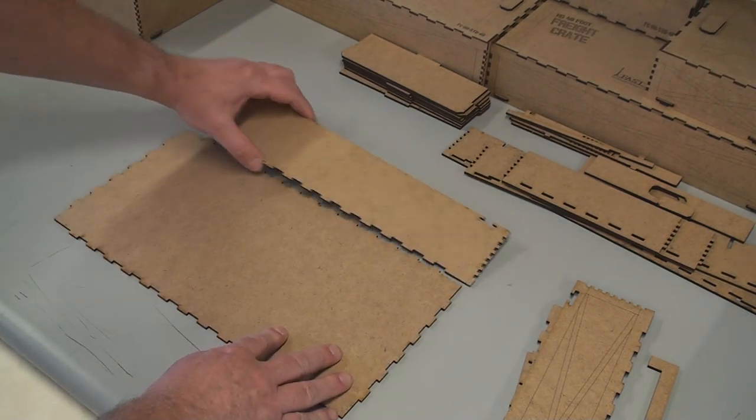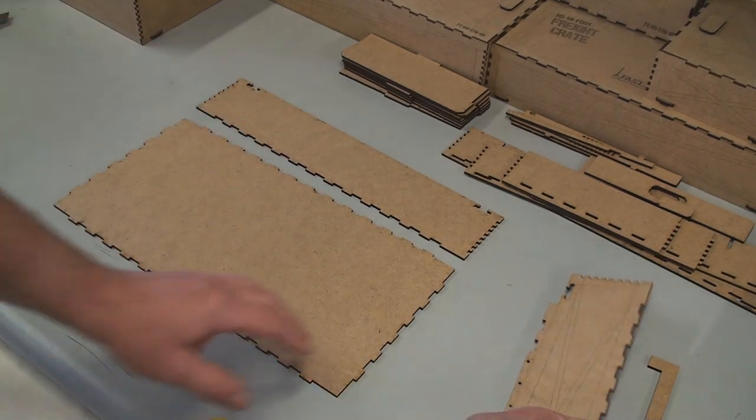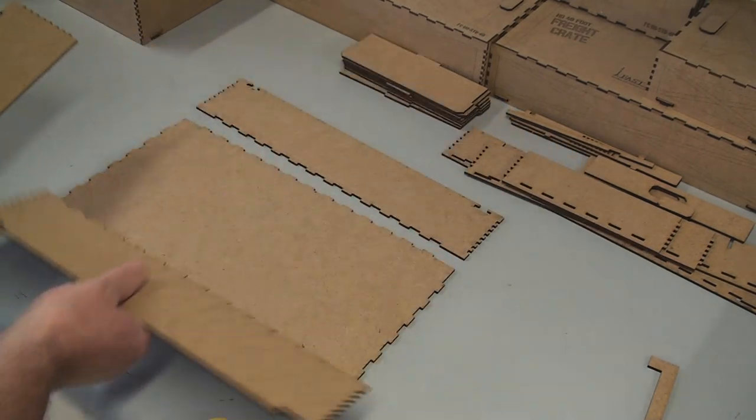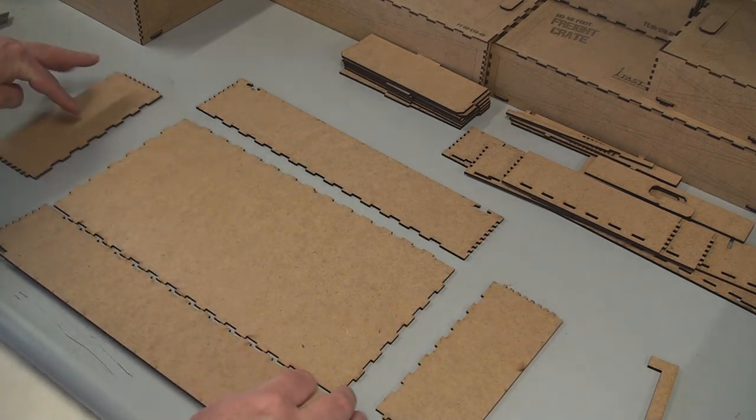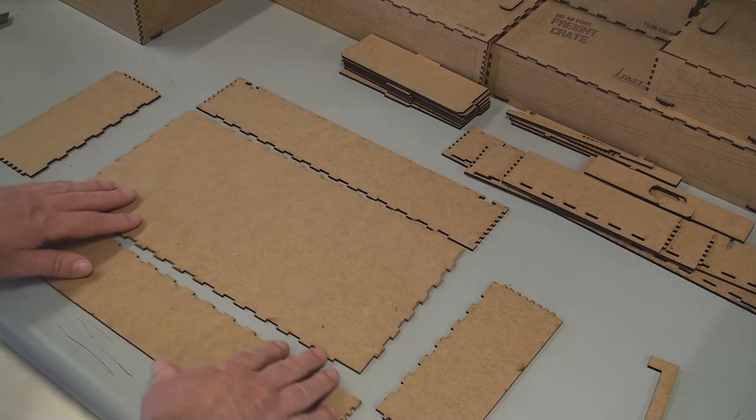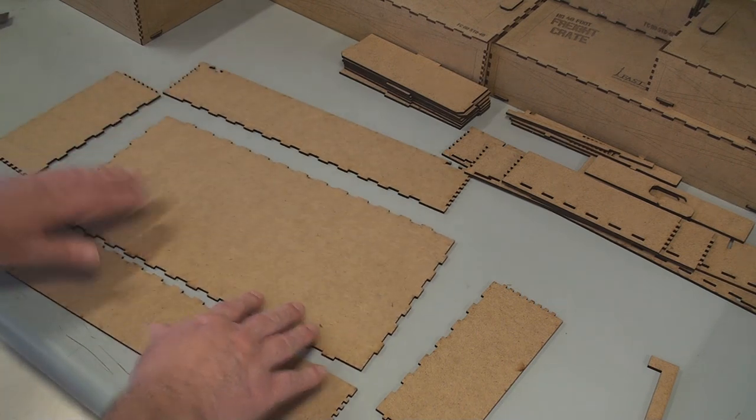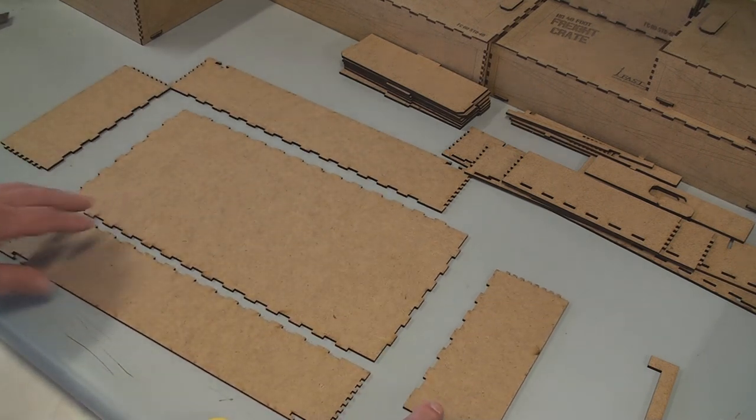So we're going to take the sides, lay them out with the engraved side down, like so. That's kind of looking at an exploded view of the lid, and we're getting ready to glue this together.